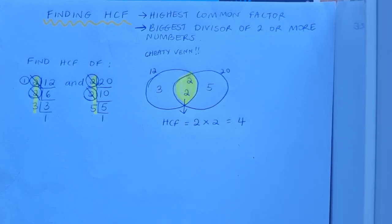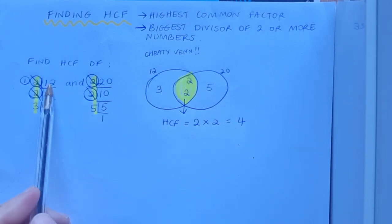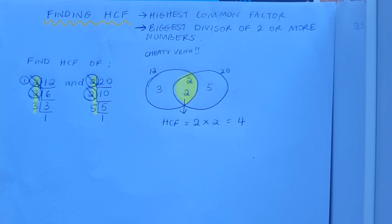So what's the story with that 4? That 4 is the biggest number that will go into both 12 and 20. That's why it's the highest common factor.